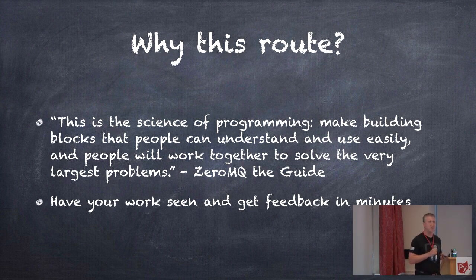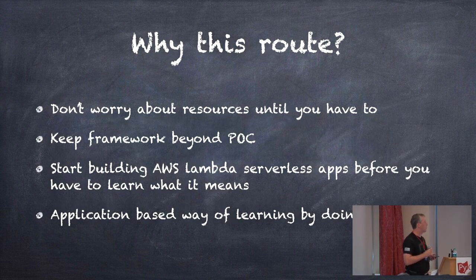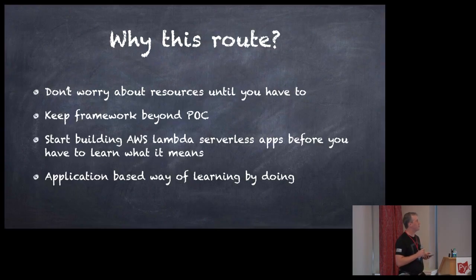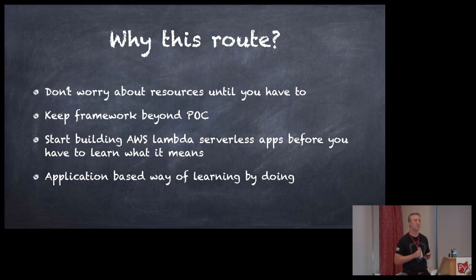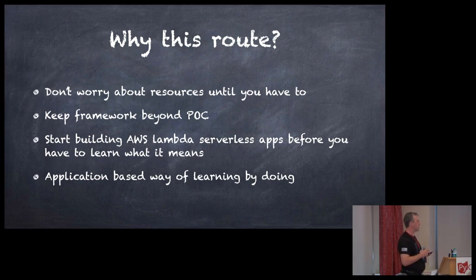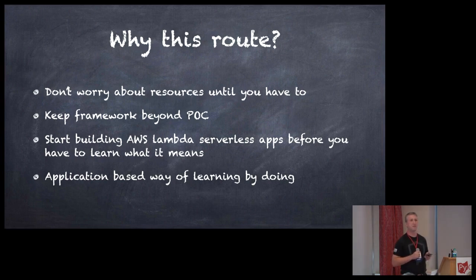Have your work and get feedback in minutes — that's very valuable. Don't worry about resources until you have to. You don't have to go to your ops and ask for resources to be allocated for a proof of concept. At the same time, keep the framework for your proof of concept — you can just continue on with it and turn it into the real project. Start building AWS serverless apps before you even have to learn what it means — application-based learning by doing, trial by fire, small increments, small delivery.